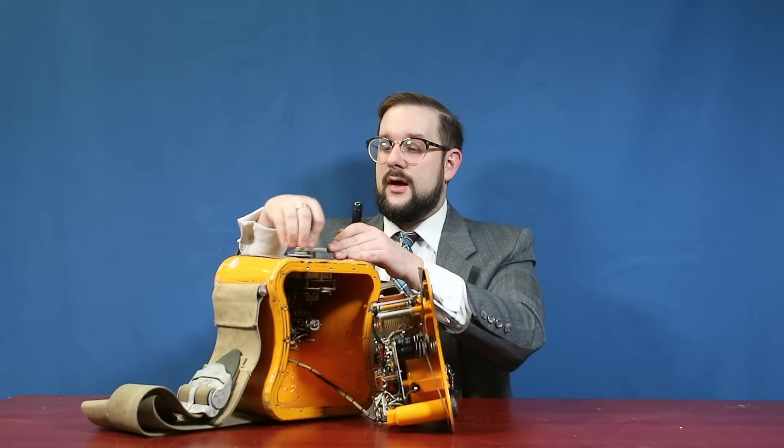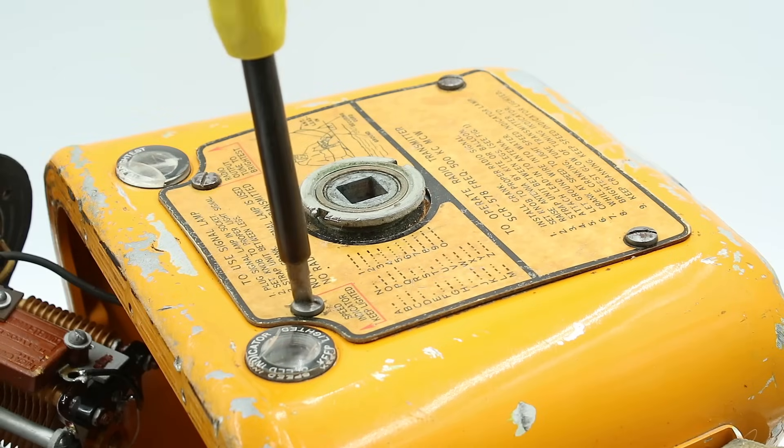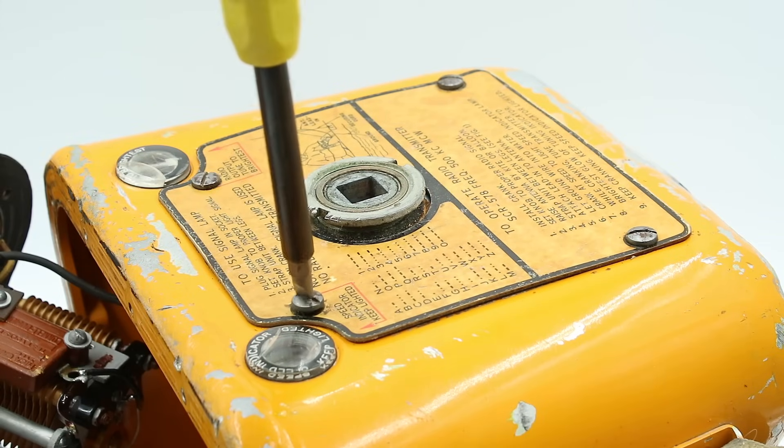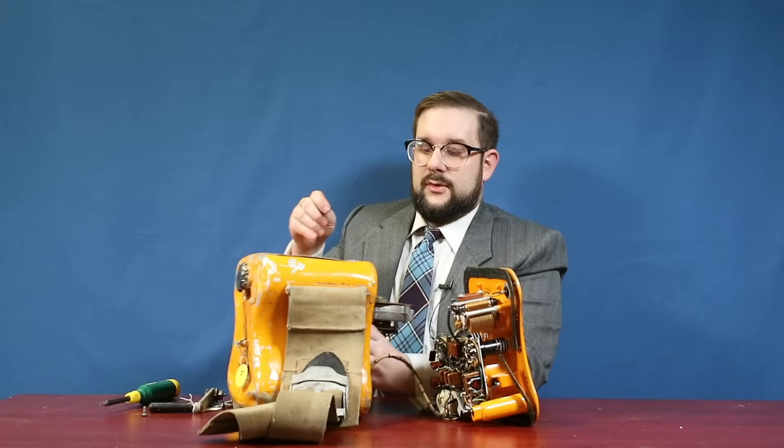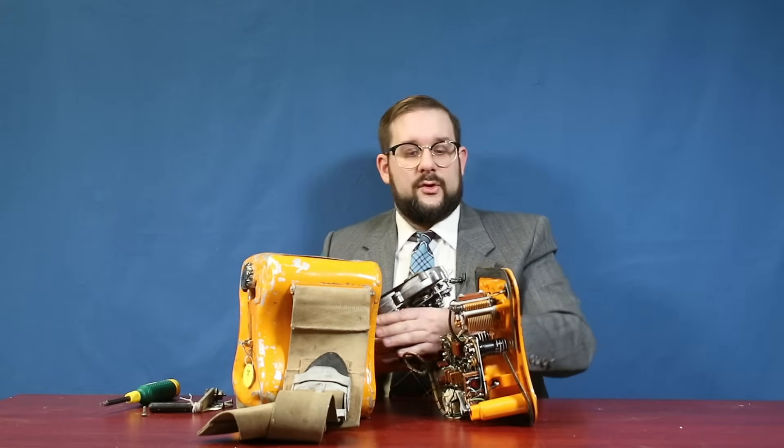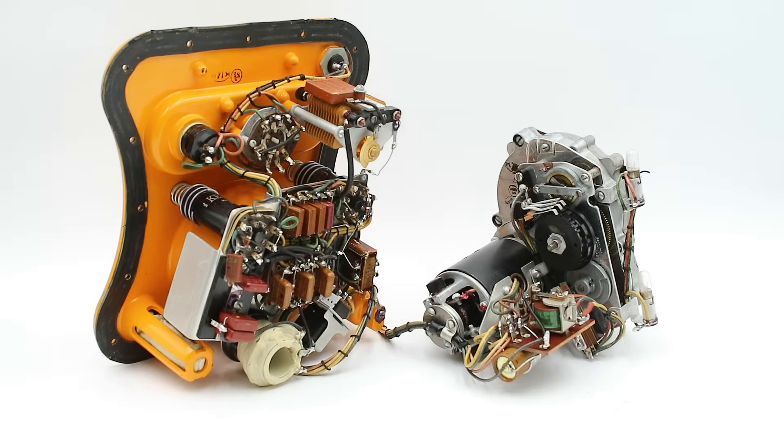Now if we take the crank off, we'll see that there are four screws and a threaded collar holding this on. And if we remove those, then we can remove the power source unit completely. And here we have the full circuitry for the Gibson girl.